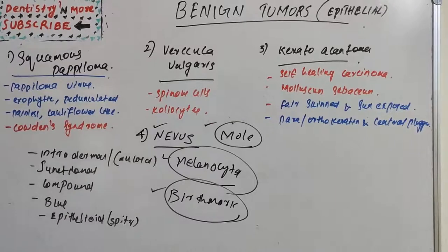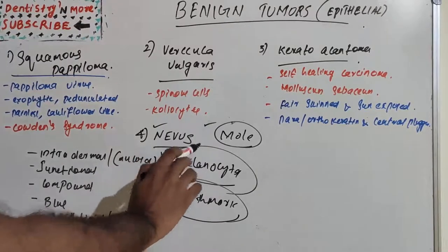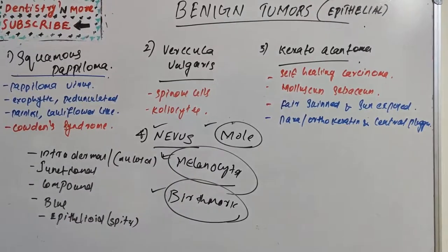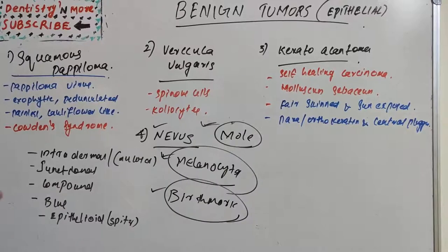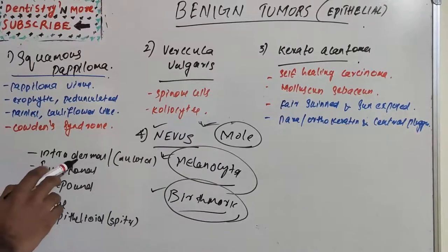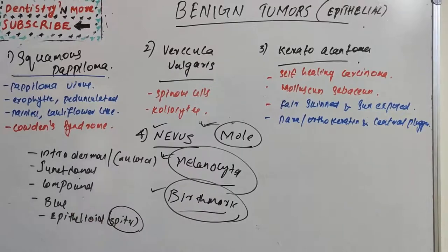A nevus is a benign, exophytic, pigmented, congenital lesion of skin or mucosa composed of a focal collection of rounded melanocytes, known as nevus cells. The term nevus is commonly used for mole, and nevi most commonly occur on skin and occasionally on mucous membranes. It is also called a birthmark. There are five types: intramucosal (intradermal), junctional, compound, blue nevus (macular form), and epithelioid or Spitz nevus.